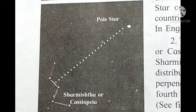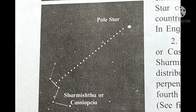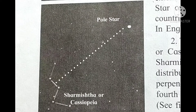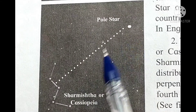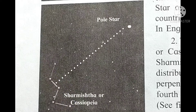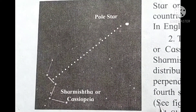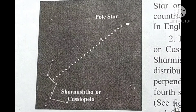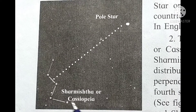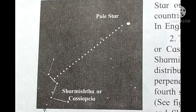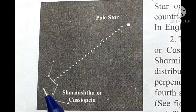Next, we are talking about Sarmishta. The perpendicular bisector of the line joining the third and fourth star in Sarmishta goes toward the pole star. The pole star has Saptarshi on one side and Sarmishta on the other side.